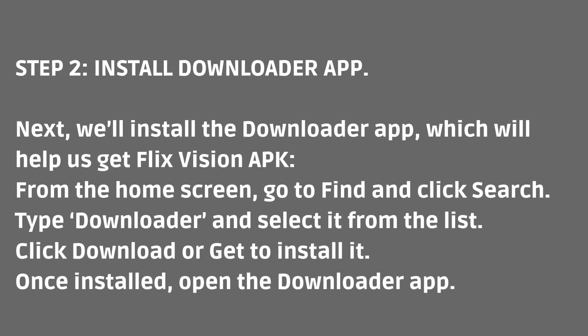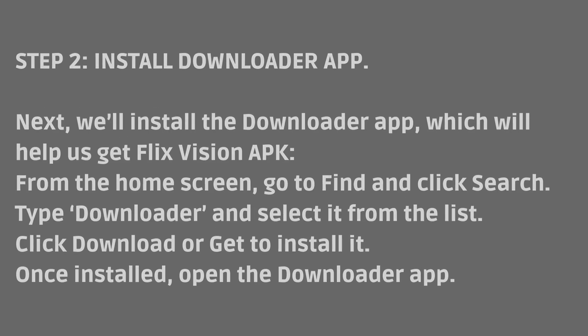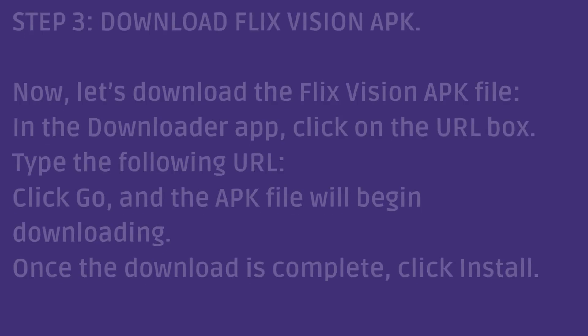Step 2: Install Downloader App. Next, we'll install the Downloader App, which will help us get the FlixVision APK. From the home screen, go to Find and click Search. Type Downloader and select it from the list. Click Download or Get to install it. Once installed, open the Downloader App.